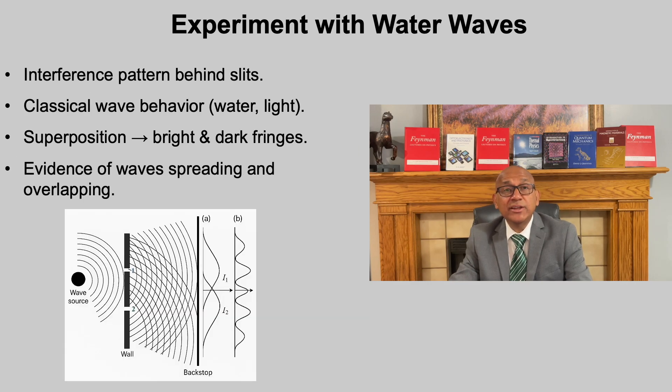Now consider experiments with waves. When we send waves through two slits, whether water waves or light waves, something remarkable happens. Each slit becomes a new source of waves that spread out in circular ripples. Where the ripples overlap, they interfere, sometimes reinforcing each other to make bright regions and sometimes cancelling to make dark regions. On the screen, this interference shows up as a series of bright and dark stripes, not just two peaks. This is the hallmark of wave behavior, the ability to superpose and interfere. It is the phenomena that made scientists realize that light itself must behave as a wave.